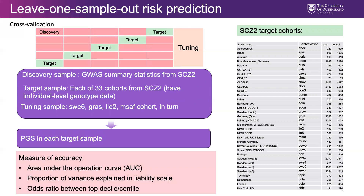We used three statistics to measure the performance of different methods: AUC, proportion of variance explained in the liability scale, and odds ratio. I will go through each of them to show how to calculate each of those statistics.